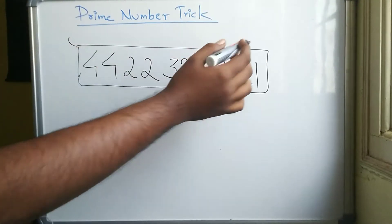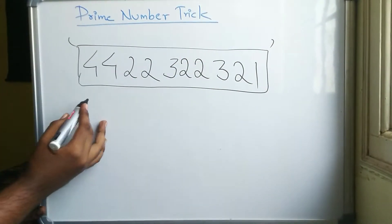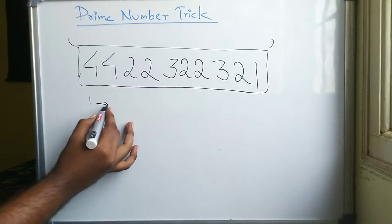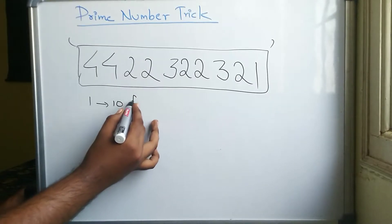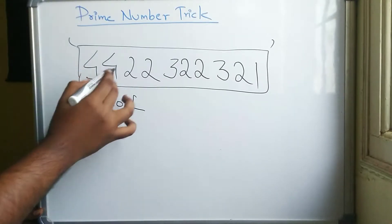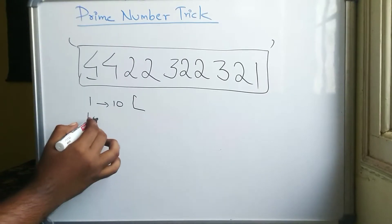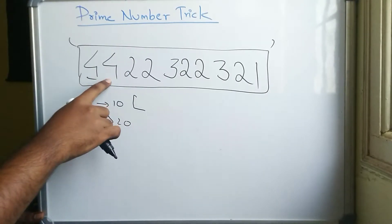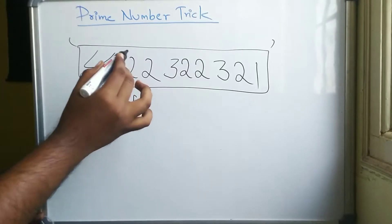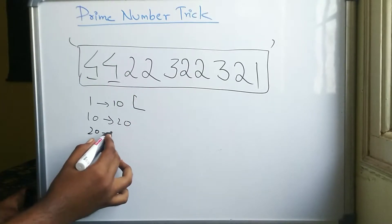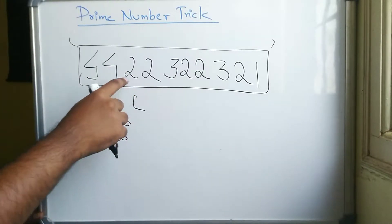This number's meaning is this: Once we have 1 to 10, how many prime numbers are? 4. From 10 to 20, how many prime numbers are? 4. From 20 to 30, how many prime numbers are? 2.